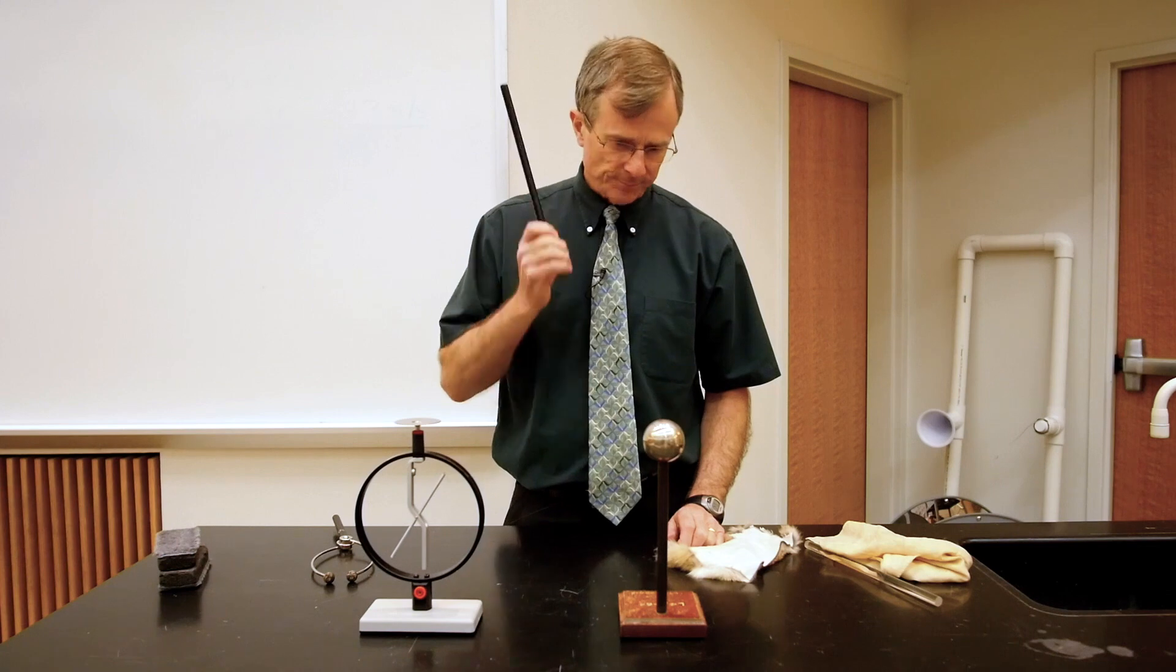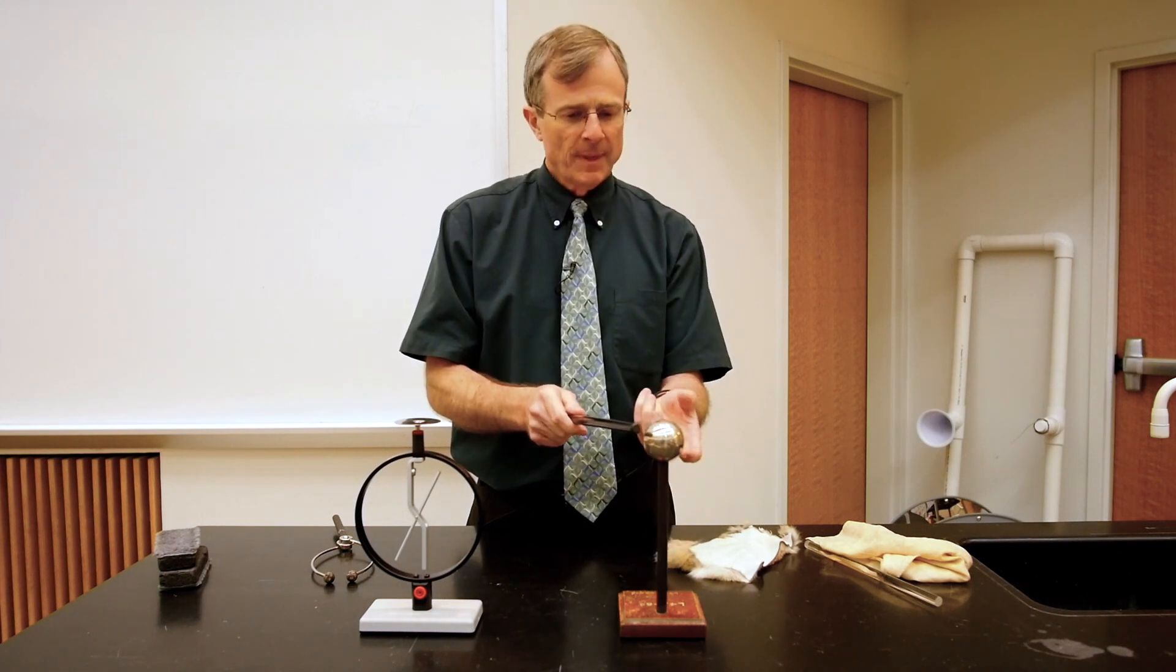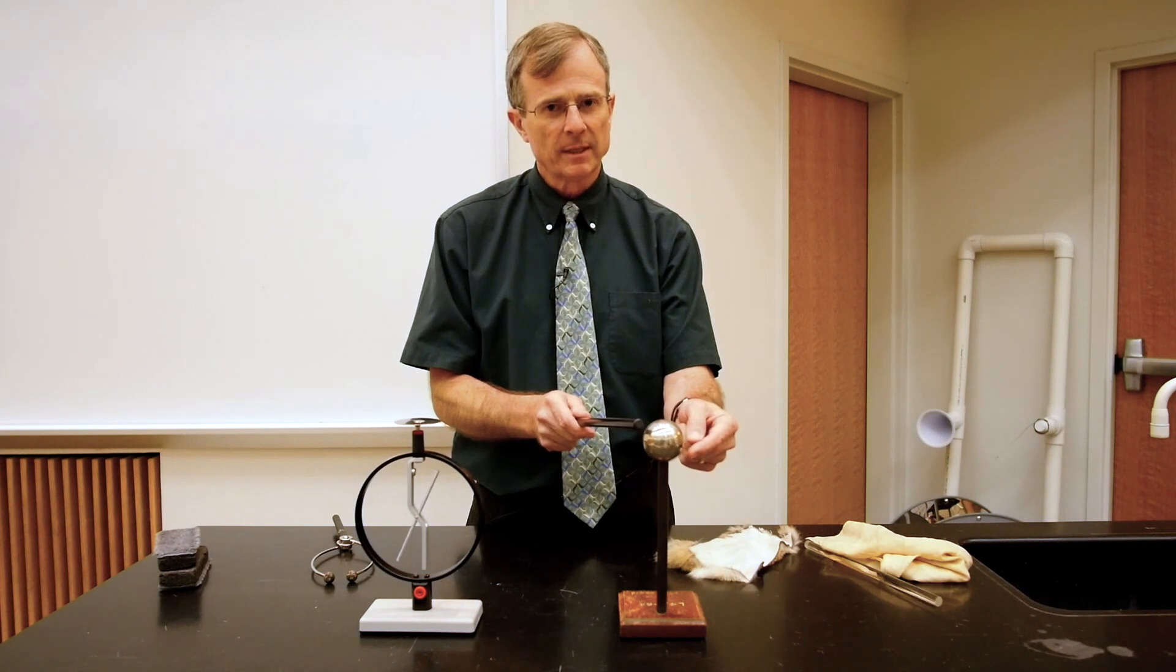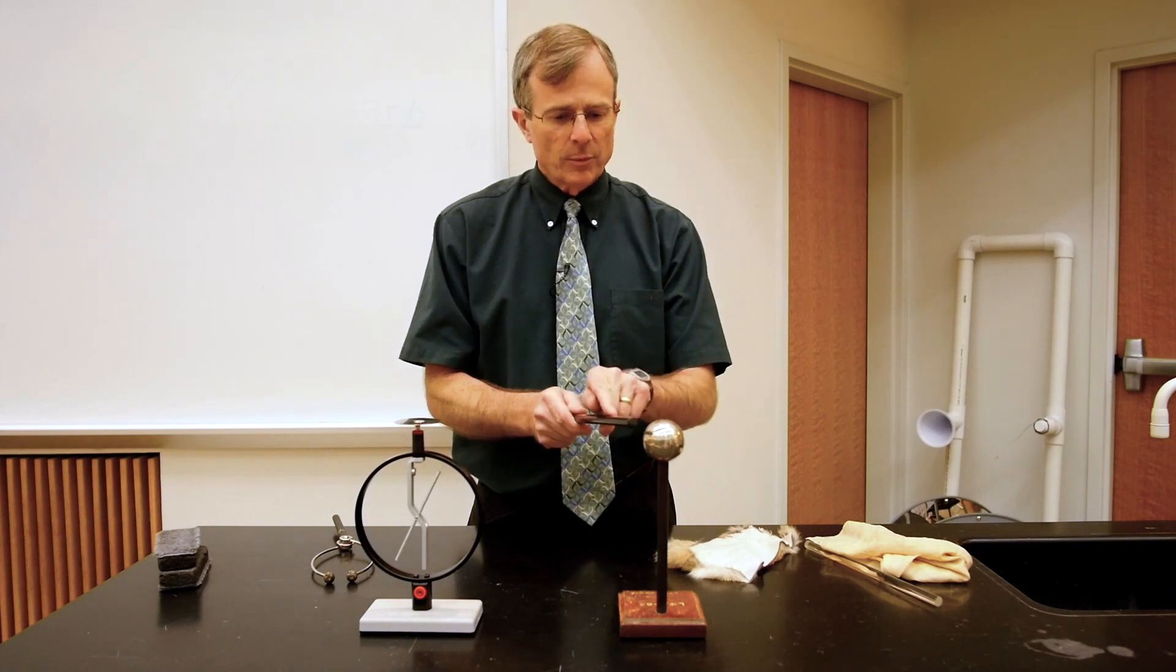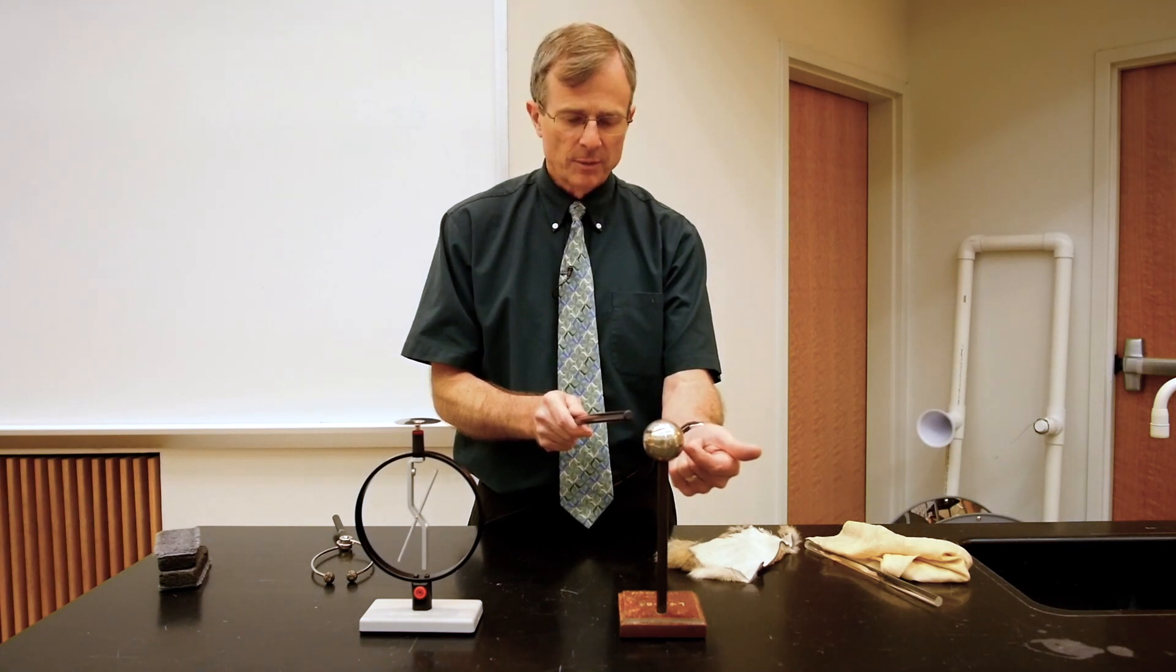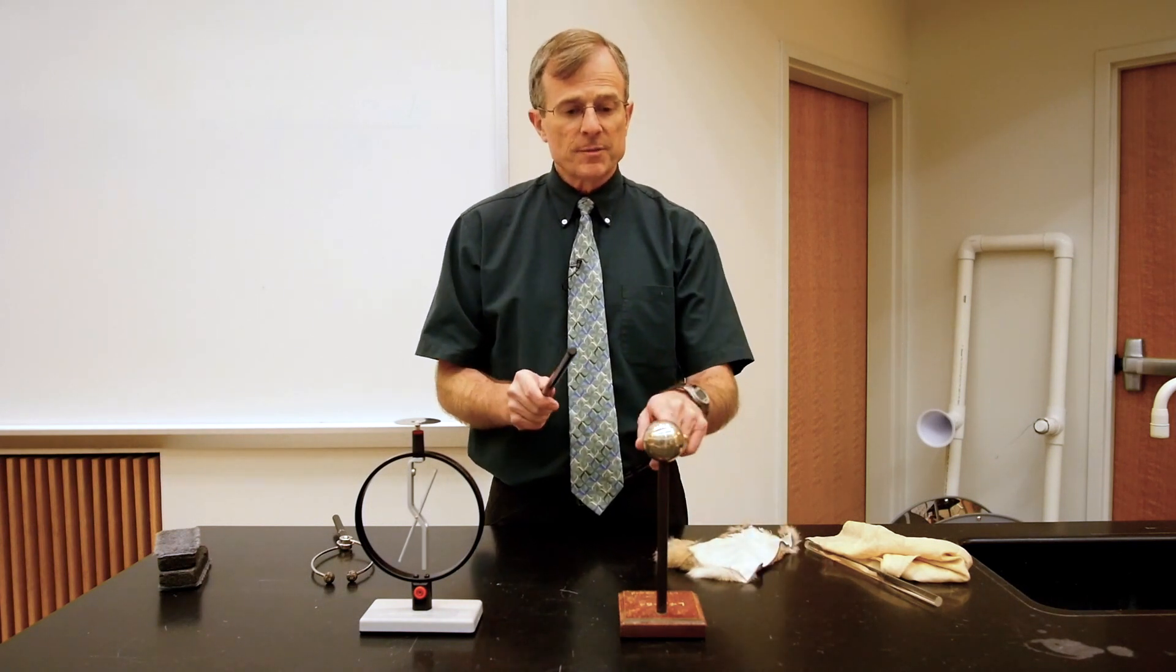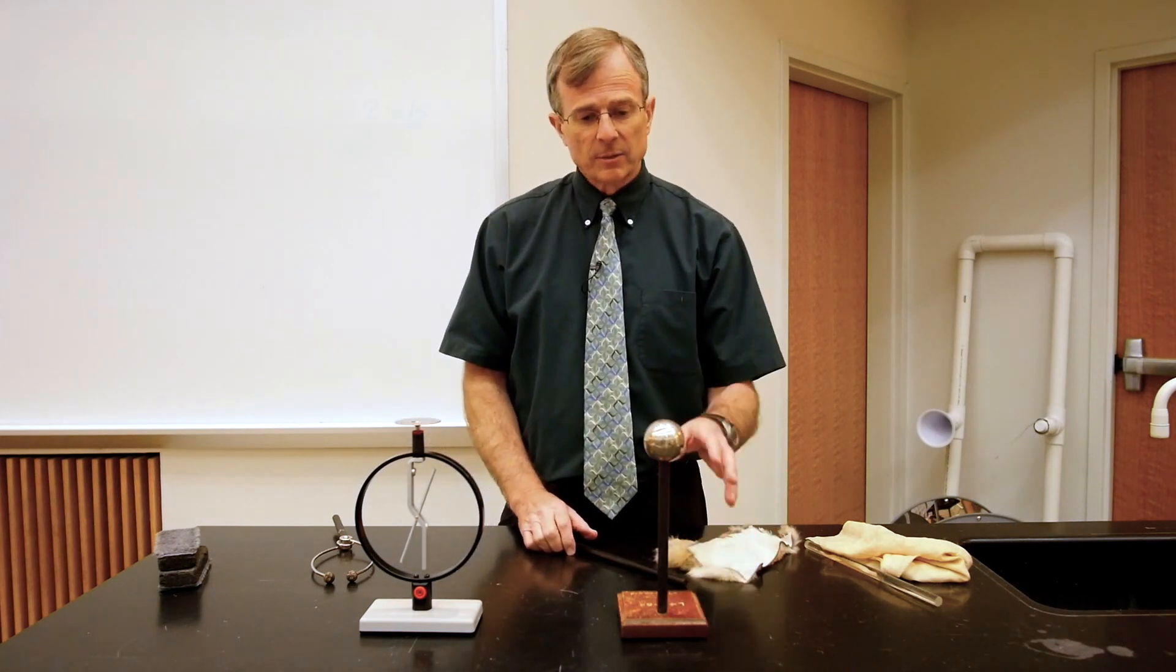So I never touch this negative rod to this metal sphere. How did it get charged? The answer is this rod being charged negatively repelled the electrons on the sphere that were closest to the rod. So the electrons got pushed over to the other side, leaving some positive charge attracted to the negative rod. And when I touched the opposite side, the place where the electrons got pushed with my finger, it allowed those negative charges to bleed off of the sphere.